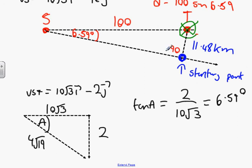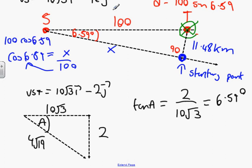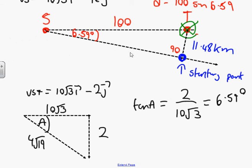What I'm also going to do is find this distance here. Can anybody tell me how to find that distance? Cos 6.59 equals X over 100, so 100 cos 6.59 gives us 99.34 in this direction here.